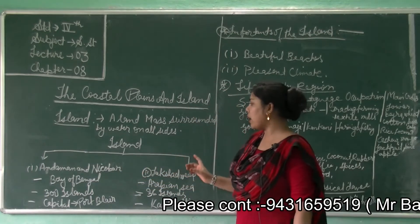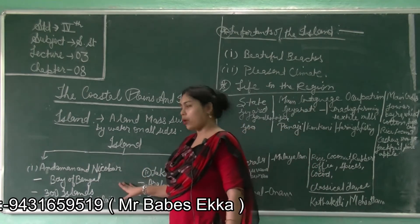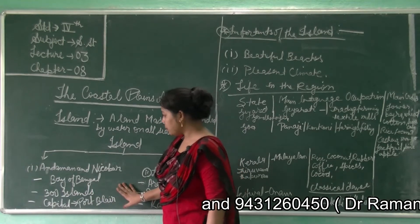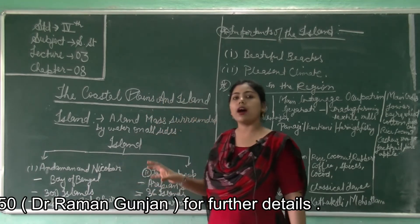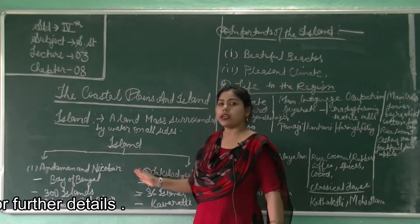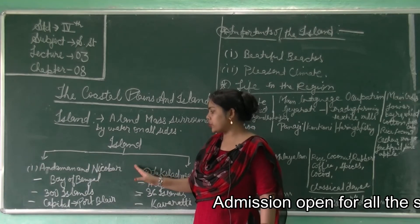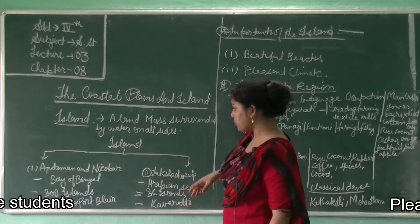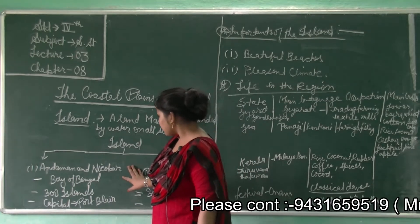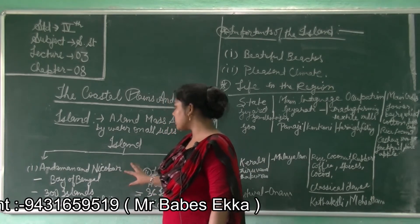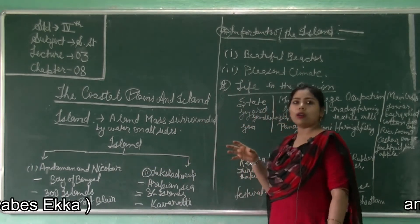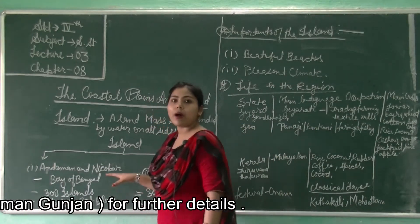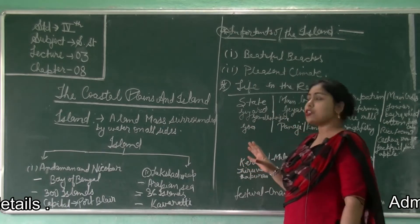The Andaman Nicobar Islands lie in the Bay of Bengal and are surrounded by water from all sides. It is made up of 300 islands. Andaman Nicobar is also a Union Territory and its capital is Port Blair. It is covered with dense forest, which is why there is little habitation here. It is also called Kalapani during the British era.